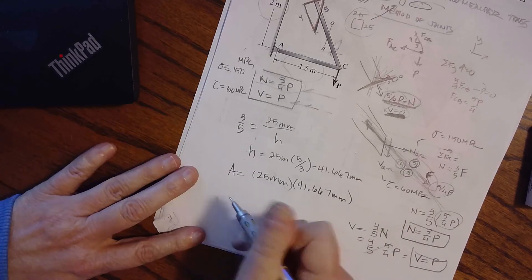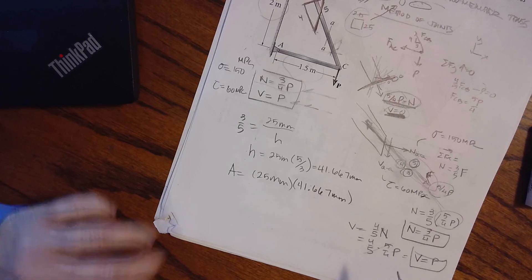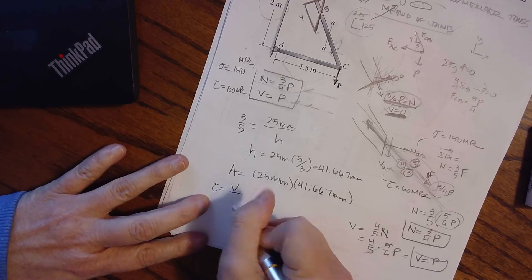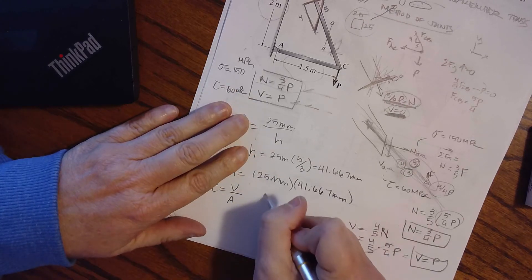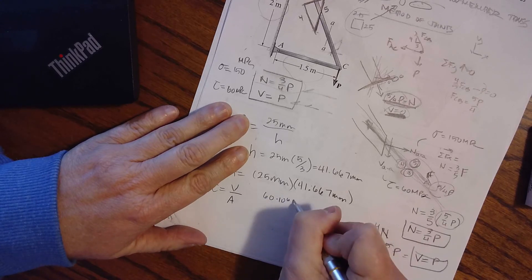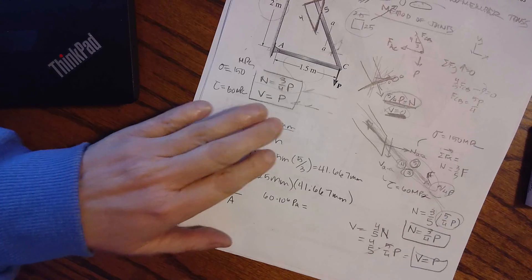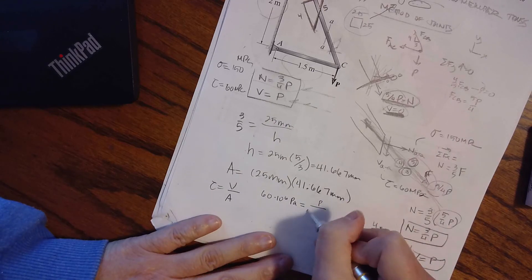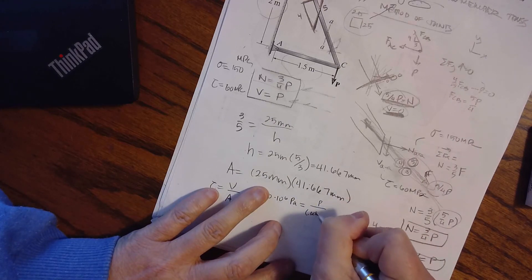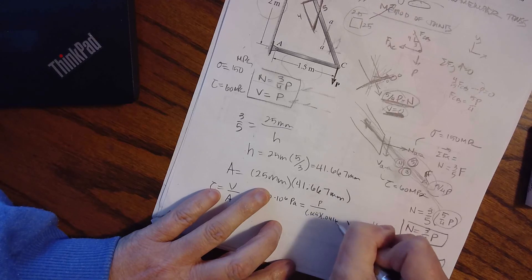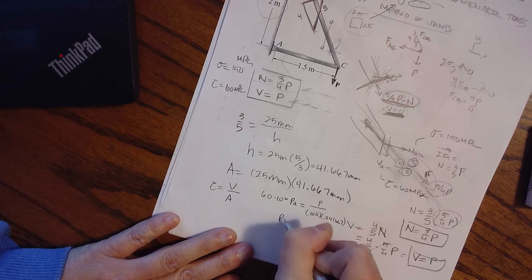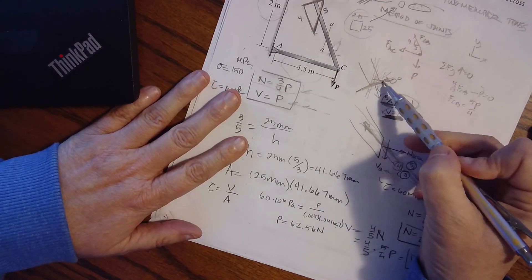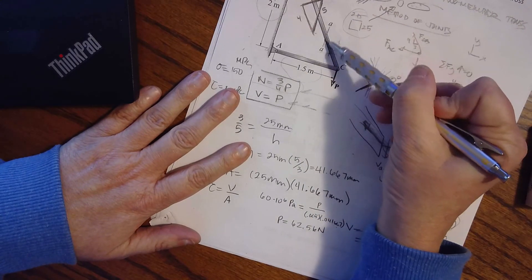Now if I am trying to figure out the limiting load, shear stress equals shear over area. My shear allowable is 60 times 10 to the 6 megapascals, which is a newton per meter squared. My shear in terms of my load is a force P, and my area is 0.025 times 0.041667 in meters. I can now calculate that I could have a load of 62.5 kilonewtons before I would have a shear failure along this line AA.